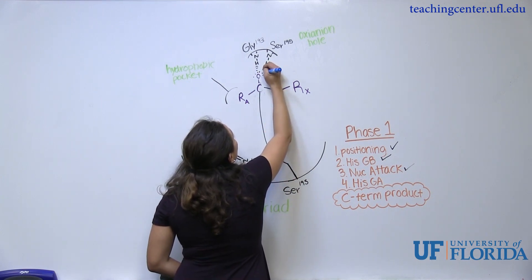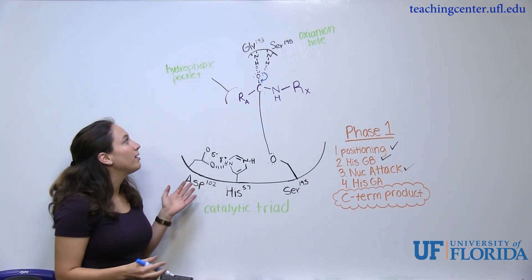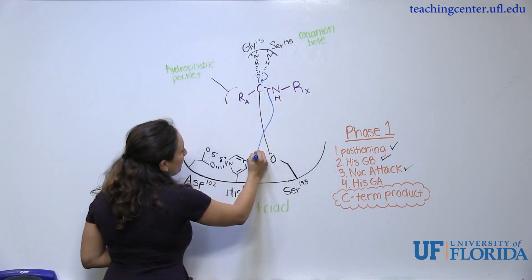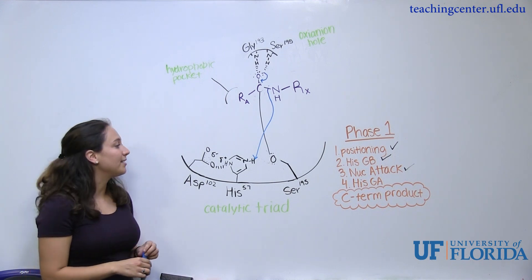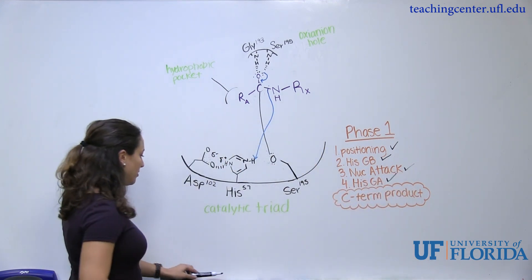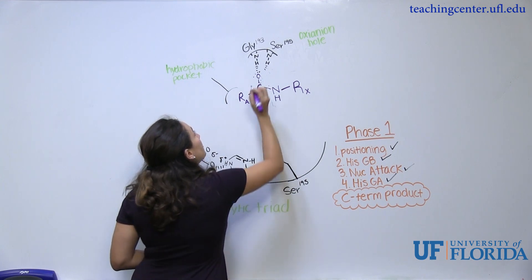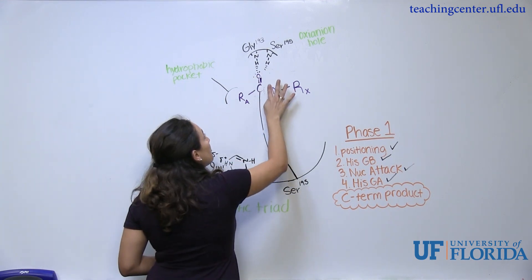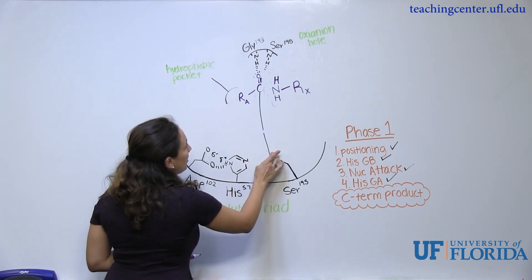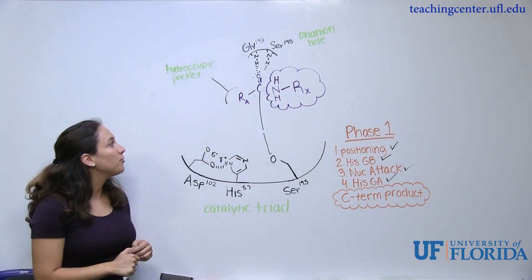The electrons from this oxygen collapse and reform the pi bond. The bond that breaks is the one to the leaving group, and those electrons attack the hydrogen on histidine — in this case histidine is acting as a general acid, donating its hydrogen. You can see that the pi bond has been reformed, this bond has been cleaved, and the C-terminal product now has the hydrogen. You have now formed your first product of this reaction, the C-terminal product, which floats away in solution. Now we're ready for phase 2.